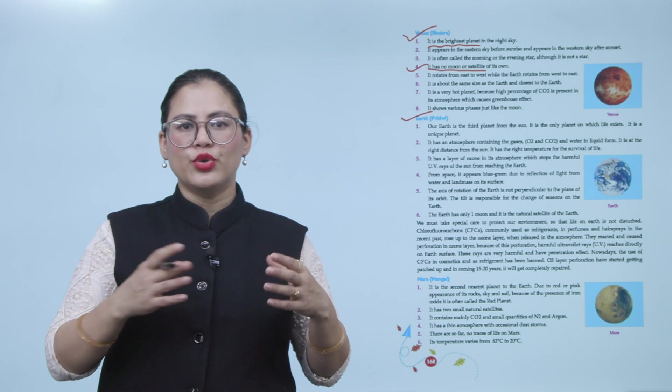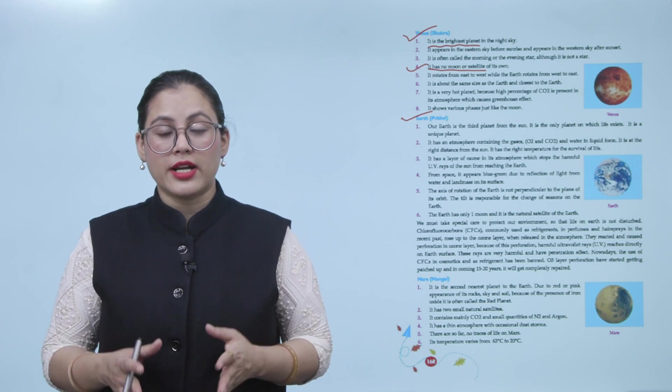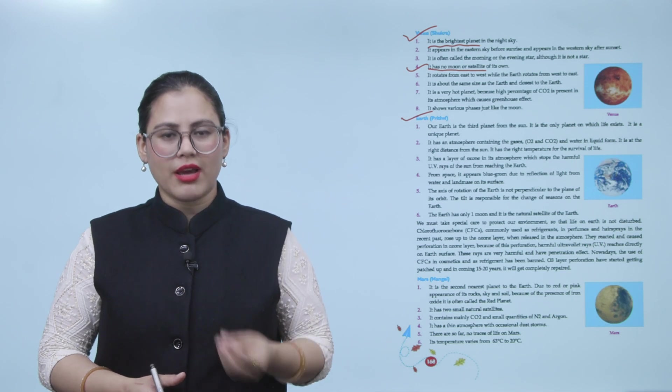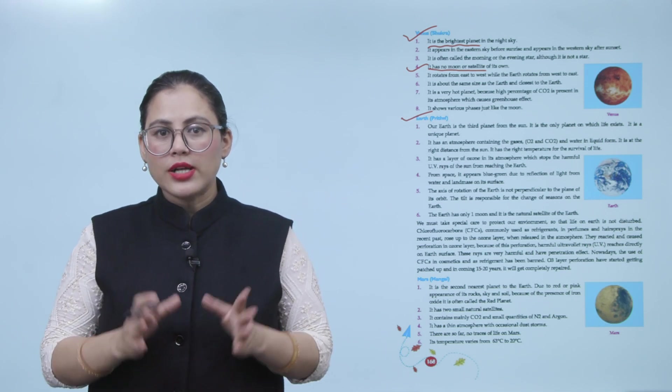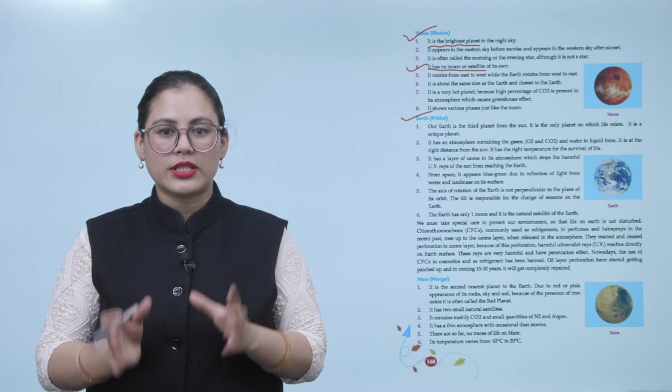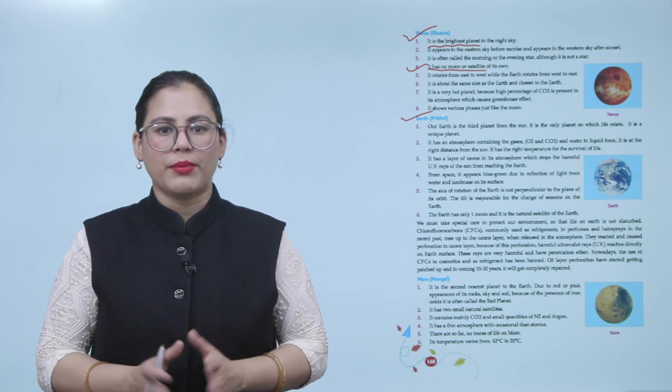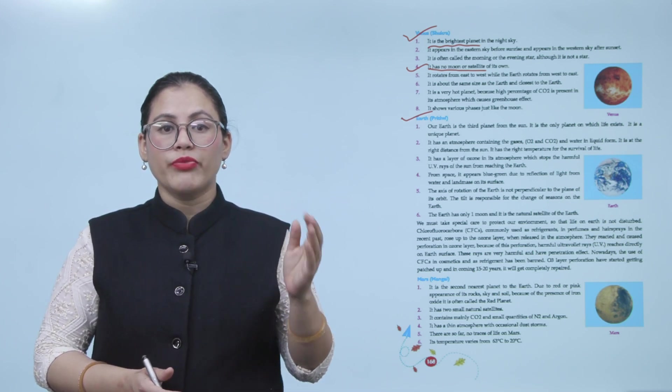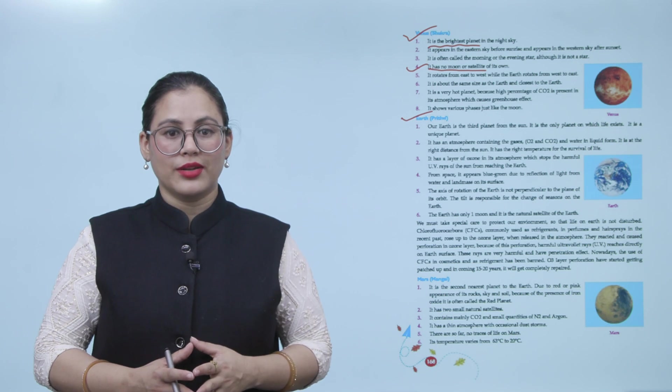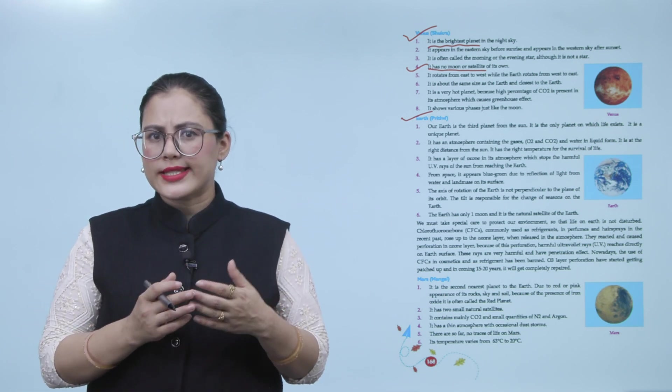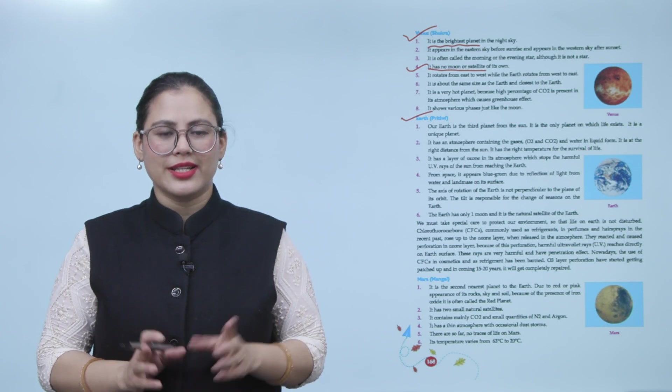Earth is our unique planet because it is the one planet on which life is possible. There is oxygen, carbon dioxide, and water in liquid form. And the most important thing is it's at the right distance from the sun. Therefore, the right temperature is maintained here. There is a layer of ozone which protects us from the harmful UV rays. And the earth has only one natural satellite.